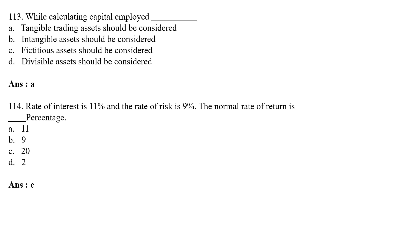While calculating capital employed — Option A: tangible trading assets should be considered; Option B: intangible assets should be considered; Option C: fictitious assets should be considered; Option D: divisible assets should be considered. The correct answer is Option A — tangible trading assets should be considered while calculating capital employed.